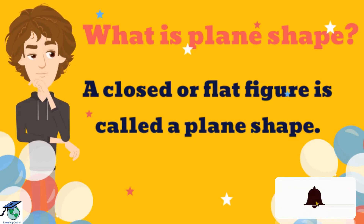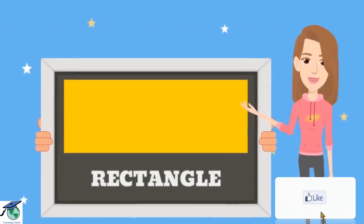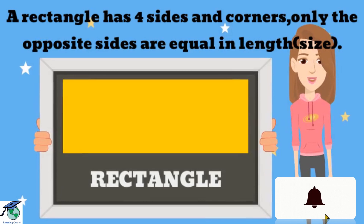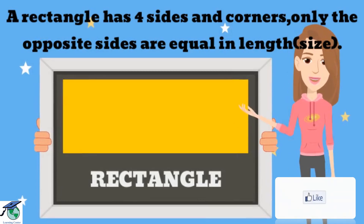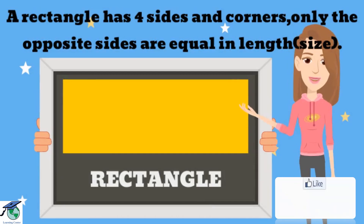Let me explain by giving an example. This is a rectangle. A rectangle has 4 sides and corners, but only the opposite sides are equal in length or size.